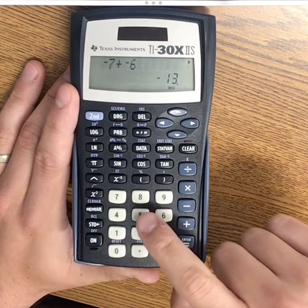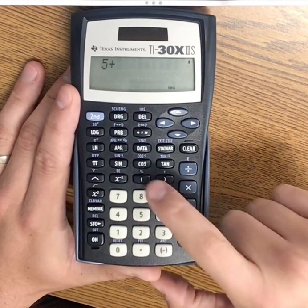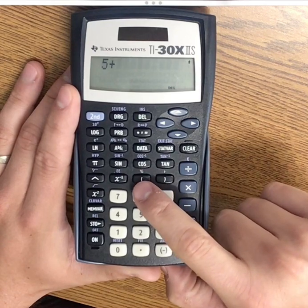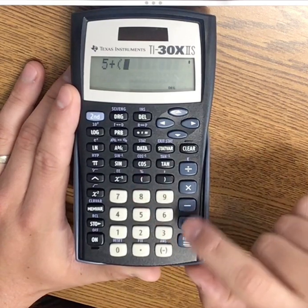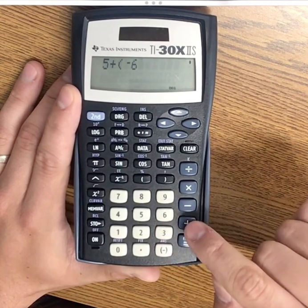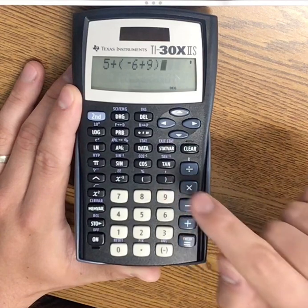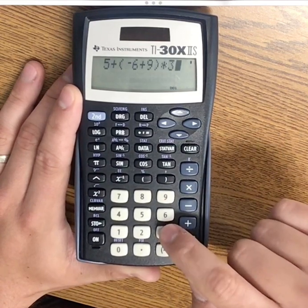times 3. So if I had 5 plus the quantity, I would use parentheses. Negative 6 plus 9, end parentheses, times 3.